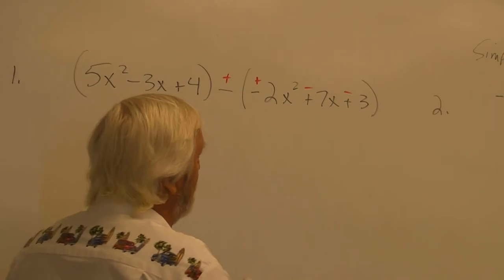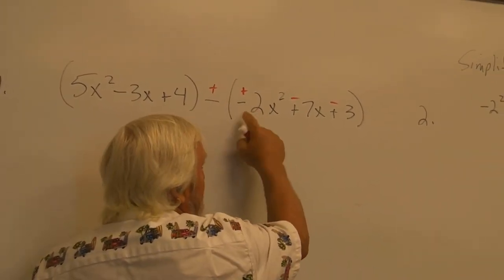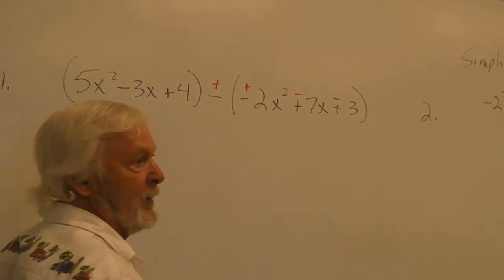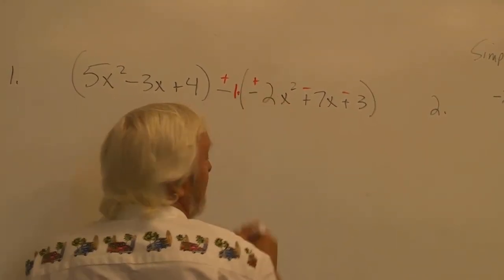So what we're doing, we're distributing negative 1, distributive property of negative 1 times this, negative 1 times that, negative 1 times that. That's literally what we're doing because there's a 1 right here and it's being multiplied.